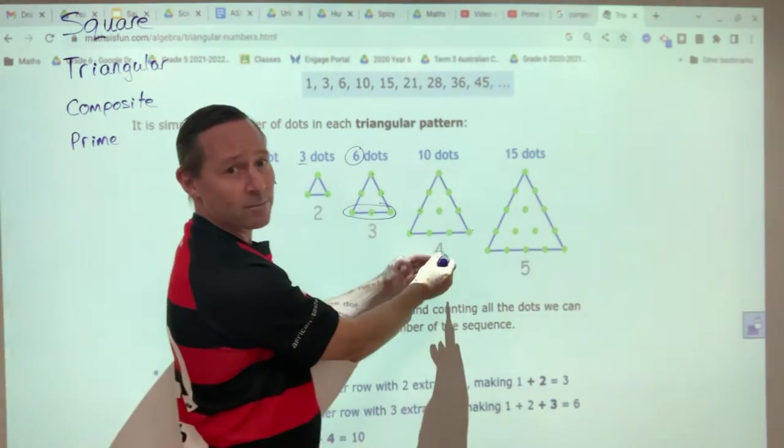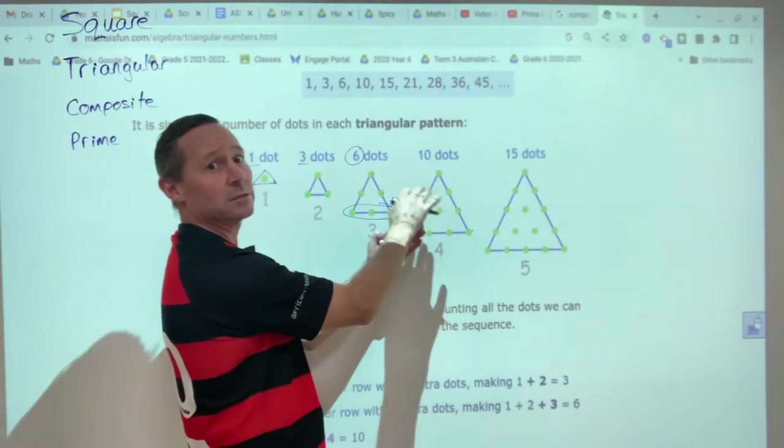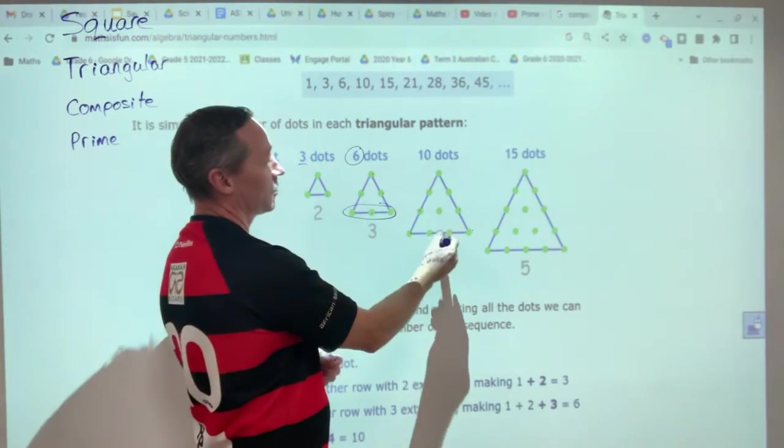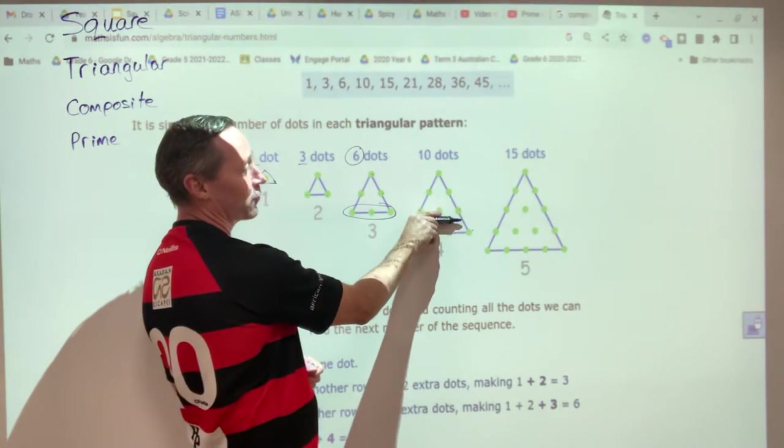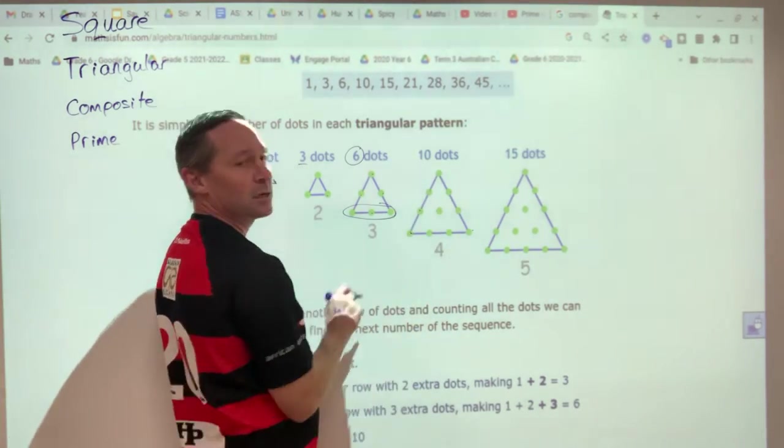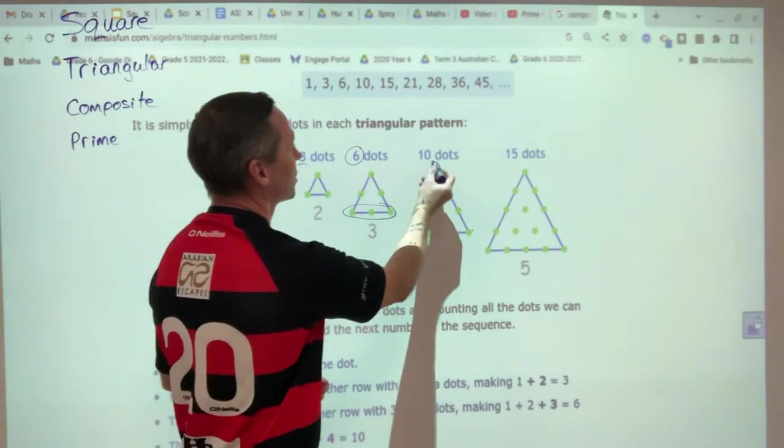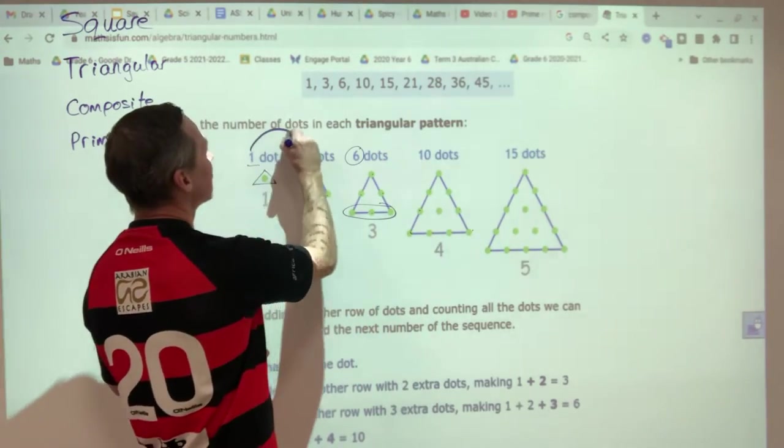My fourth one, I'm going to actually add four to the previous one. So now I've got a row of four, a row of three, a row of two, a row of one. Total of ten. You can probably see a pattern happening here.